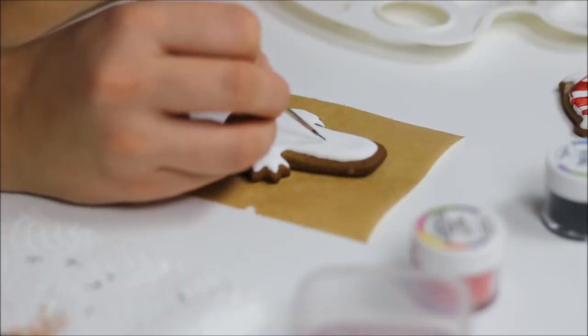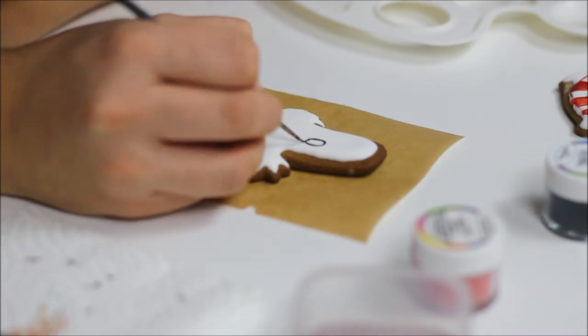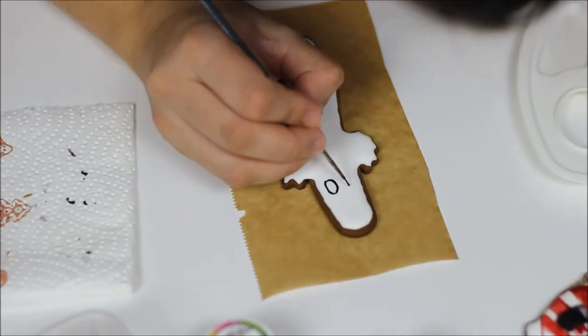Once the cookie has dried, take some black cake decorating powder, mix with water and start outlining the eyes.